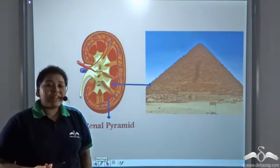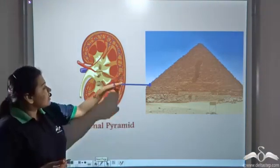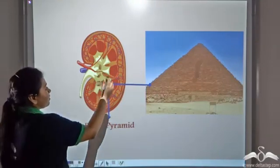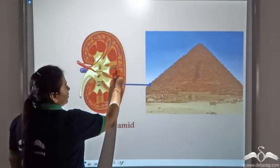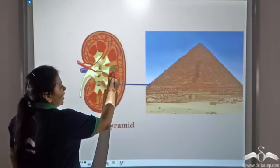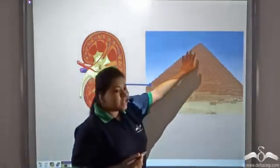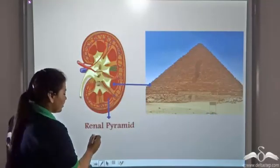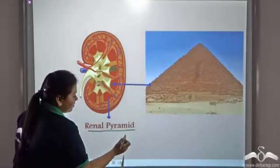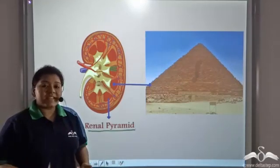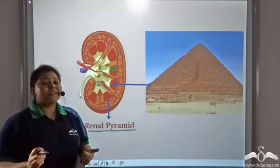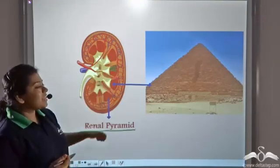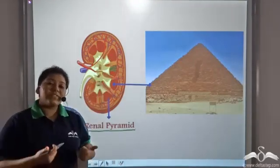The medulla consists of these fiber-like structures and these fiber-like structures form pyramids and are known as renal pyramids. So the pyramid-like structures that are present in the medulla of the kidney is known as the renal pyramid.